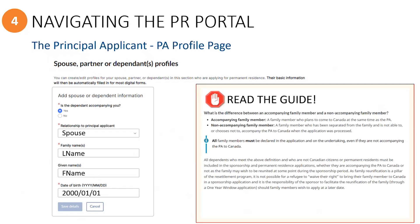You will also indicate if the dependent will accompany the principal applicant to Canada. The IMM 6000 guide provides an explanation for what each of these options mean. However, in most cases, you will select Accompanied, even if the dependents are located in a different country than the principal applicant. This is because IRCC will attempt to coordinate concurrent processing as much as possible. If this is not possible, then a one-year window application can be submitted by email to the Resettlement Operations Centre Ottawa.